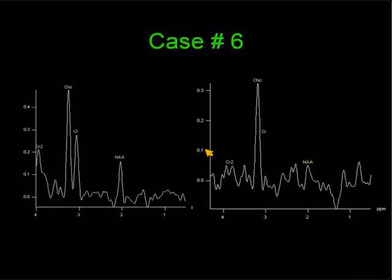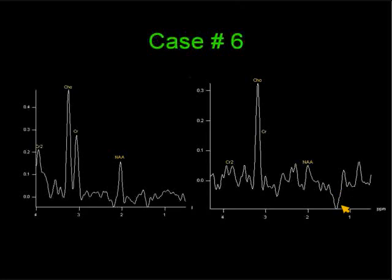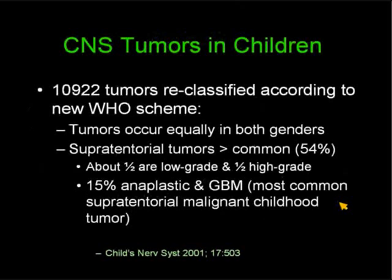Here we have the spectra of a low-grade glioma done with a long echo time. You see some elevation of the choline, about a 2-to-1 ratio with the creatine, and preservation of the N-acetyl aspartate. In malignant glioma, choline is highly elevated — at least 10-to-1 with respect to creatine — the N-acetyl aspartate has almost completely disappeared, and you start to get an inverted peak at about 1.3 parts per million, probably due to lactate and ischemia, signifying neovascularity.